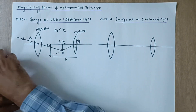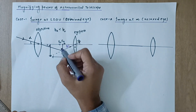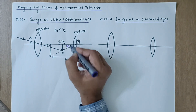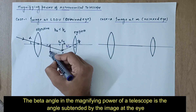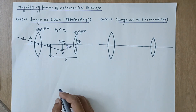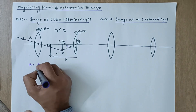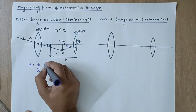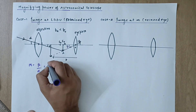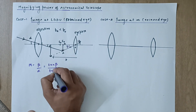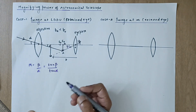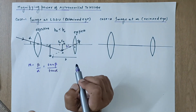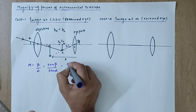The angle beta is the angle formed by the final image at the eye, or equivalently at the optical center of the eyepiece, since the eye is very close to the eyepiece. The magnifying power M is the ratio of beta to alpha. Since all angles are very small (paraxial rays), we can write M as tan beta divided by tan alpha, because sin, tan, and the angle itself are all equal for very small angles.